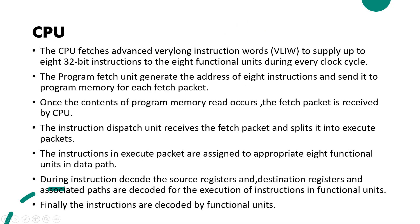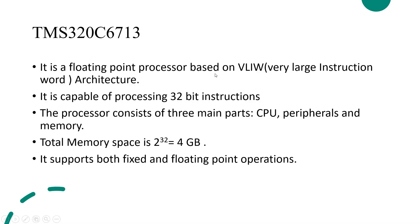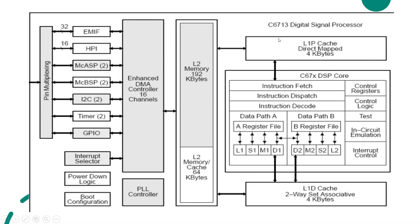It fetches 32-bit instructions in a batch of 8. The batch of 32-bit instructions is dispatched to 8 functional units. There are two memories: program memory and data memory. L1P is program memory, and L1D is data memory — P stands for program, D stands for data. Instructions are stored in program memory at corresponding addresses.